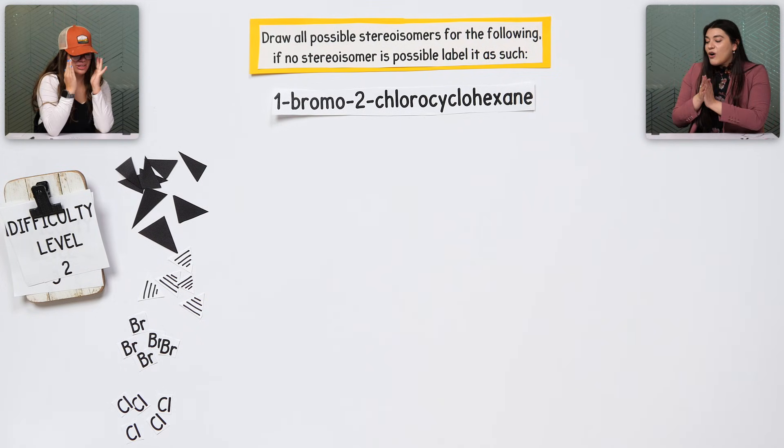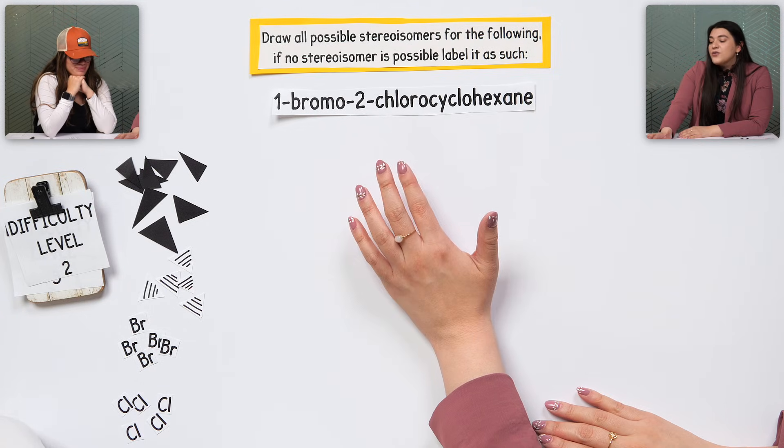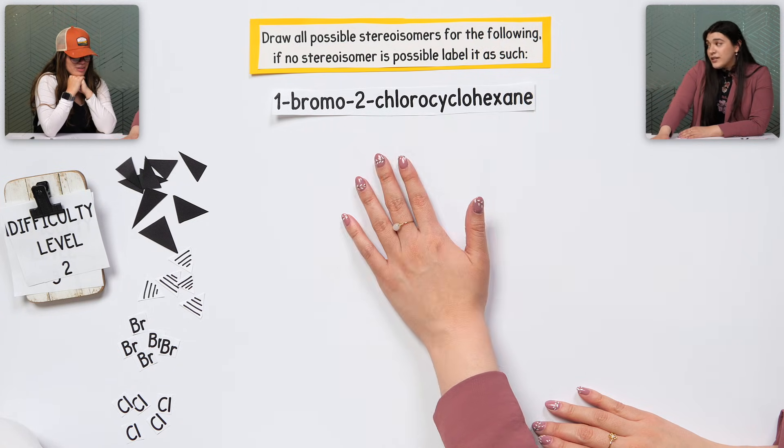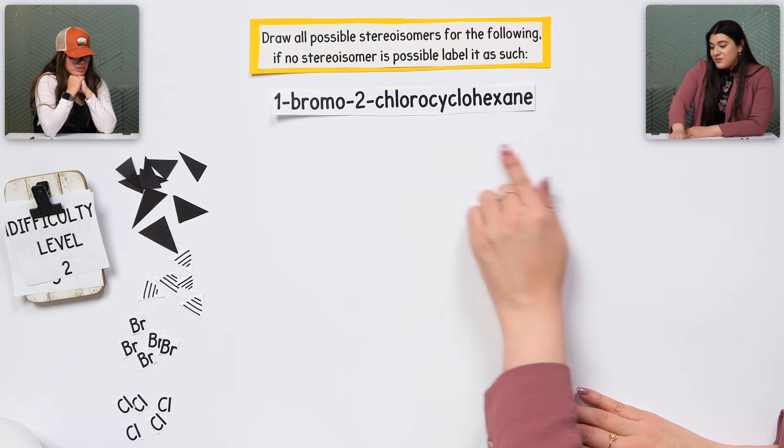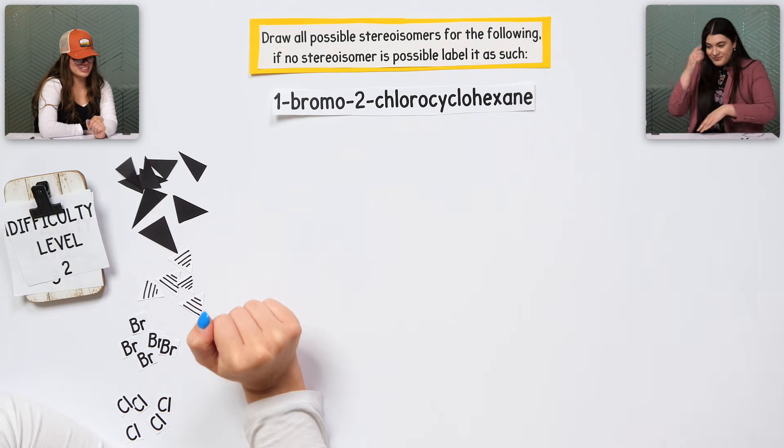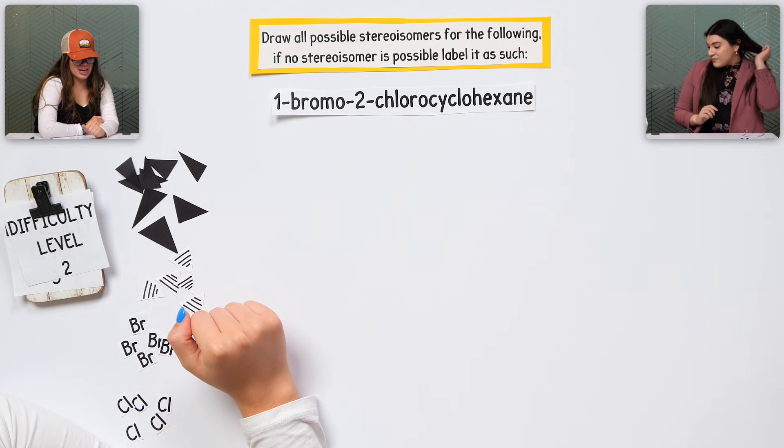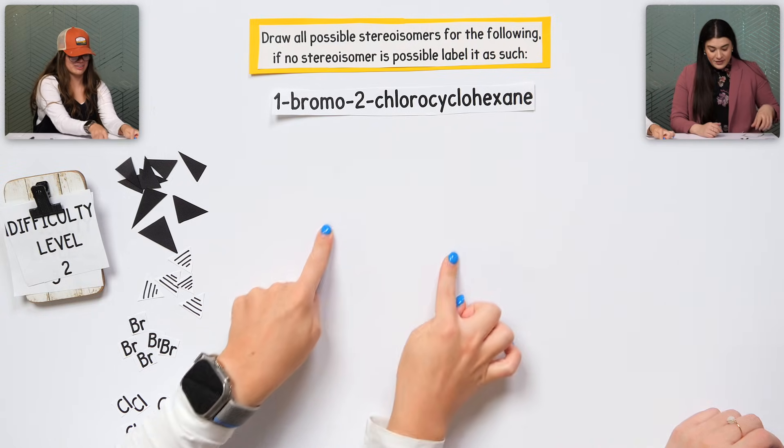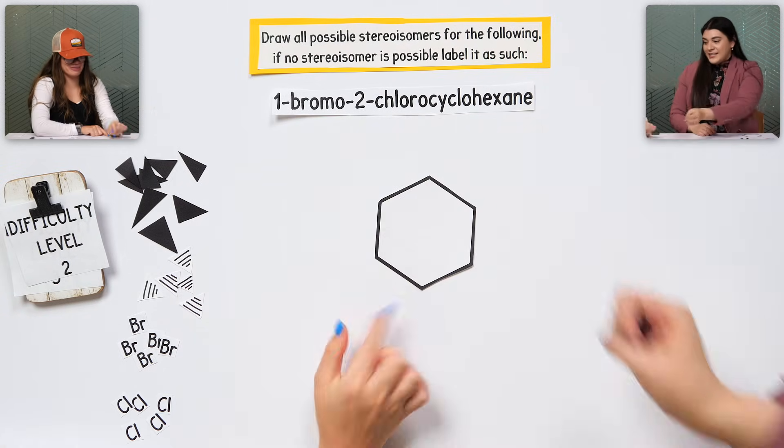We're jumping right into difficulty level two. This first one is just saying, draw all possible stereoisomers for the following. If no stereoisomer is possible, label it as such. First thing we have to do here, build it.